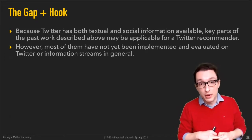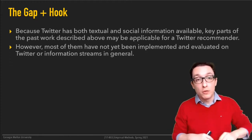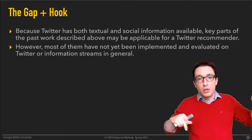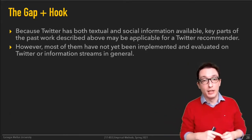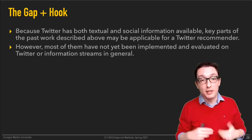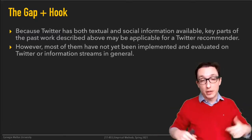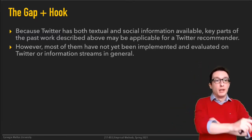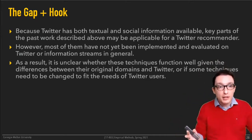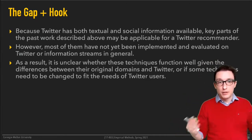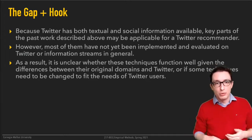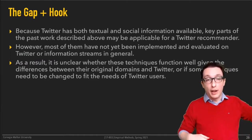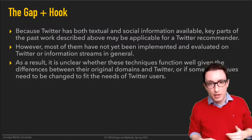Twitter has both textual and social information available, so one might wonder whether prior work approaches that use either textual or social information to mitigate the cold start problem might be applicable for a Twitter recommender. That's the knowledge gap: can we combine these things that are present in our context but have been studied separately, and apply them in this particular setting? They've not been implemented and evaluated on Twitter or information streams in general.